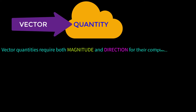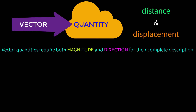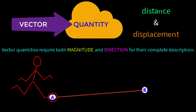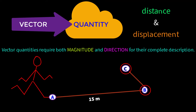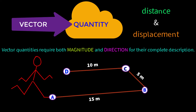Some more examples of scalar quantities are length, speed, work, energy, power, time, electric potential, temperature, and so on. Now we will learn about vector quantities. Vector quantities require both magnitude and direction for their complete description. Think about distance and displacement. Suppose this boy started his journey from point A and reached point B at a distance of 15 meters, then from point B to point C at a distance of 5 meters.